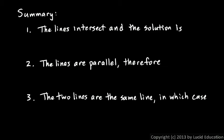So here's a summary of what we have so far. There are three possibilities whenever we have a system of two equations. The three possibilities are that the lines intersect, and the solution is the point where the lines intersect. And that's really the most common case.